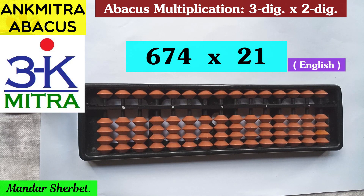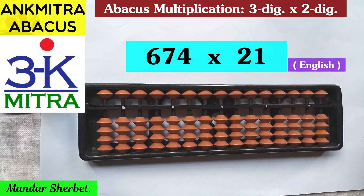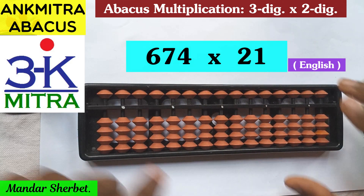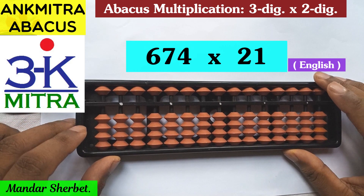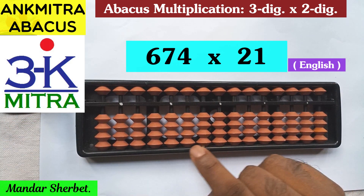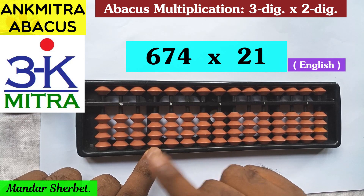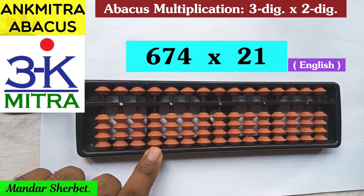Since it's a three-digit number multiplied by a two-digit number, our work on the abacus will start from the fifth rod. Three digits plus two digits — a total of five digits will be in play here. This is our units place, that is the first rod, then second, third, fourth, and fifth. So we'll start from the fifth rod.